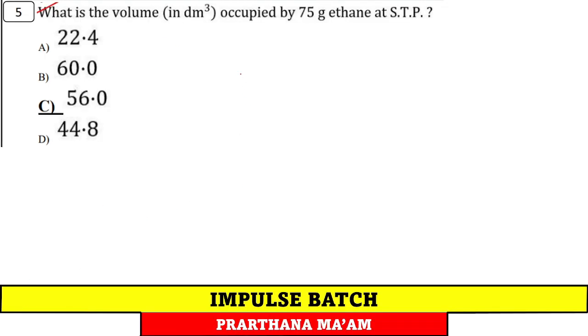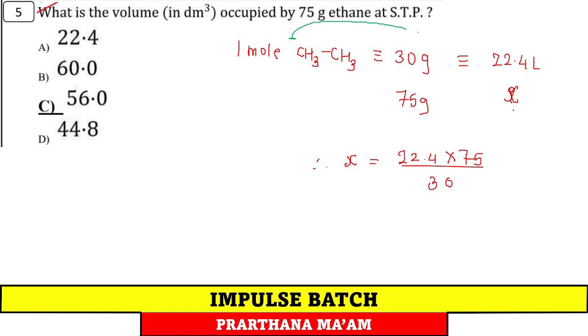Question number 5. What is volume in dm cube occupied by 75 gram ethane? We know 1 mol ethane has mass 2 carbon is 24, 6 hydrogen is 30 gram. 30 gram corresponds to 22.4 liter. We need to find 75 gram corresponds to how many dm cube. So x equals 22.4 into 75 divided by 30. This is 1 mol of any gas is 22.4 liter, we call it molar volume. So 30 gram is 22.4, then 75 gram is how much.